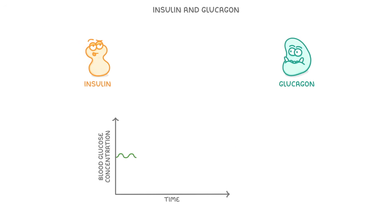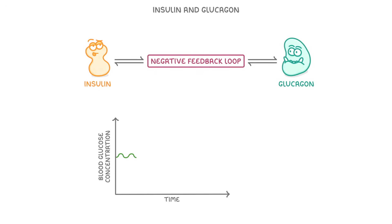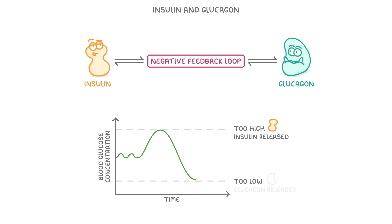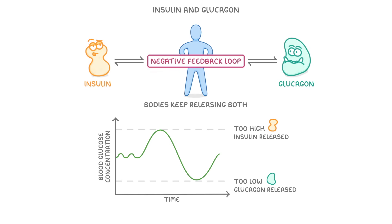If you think about insulin and glucagon together, you can see they create a negative feedback loop. If glucose levels get too high, then insulin is released, which causes the glucose to drop down again. But if it drops too low, then glucagon is released, which causes the glucose levels to increase again. In reality, our bodies keep releasing insulin and glucagon to ensure that the amount of glucose in our bloodstream is always kept around the right levels. And this is why our blood glucose concentration constantly fluctuates like this, rather than being a flat line.